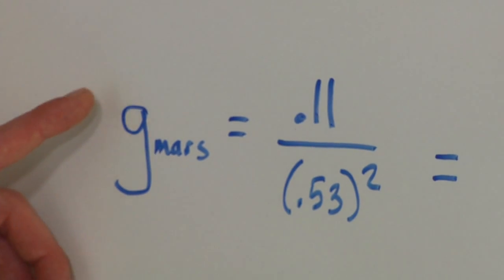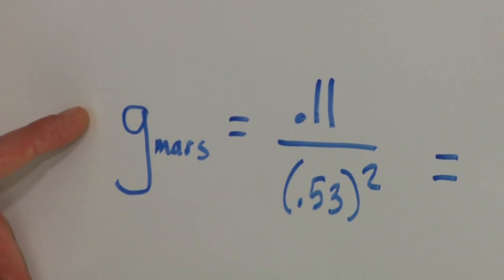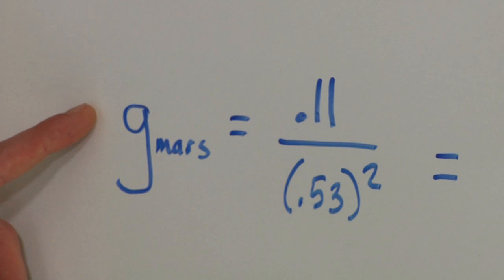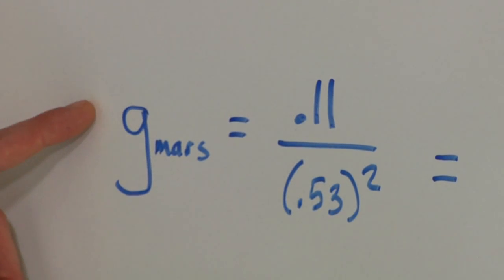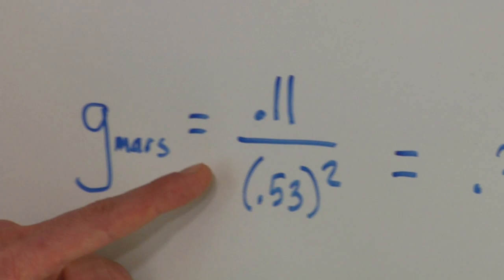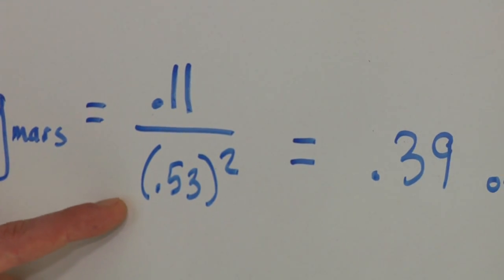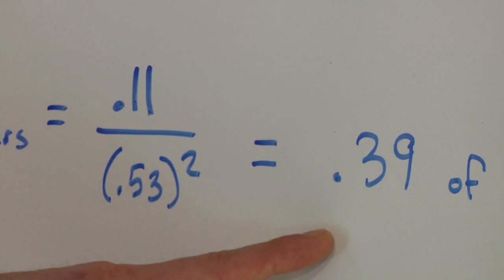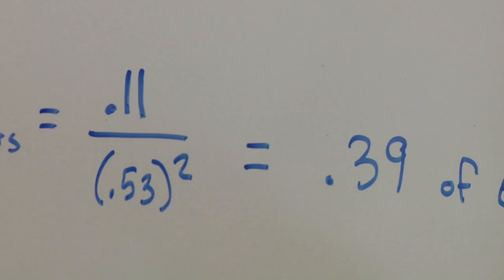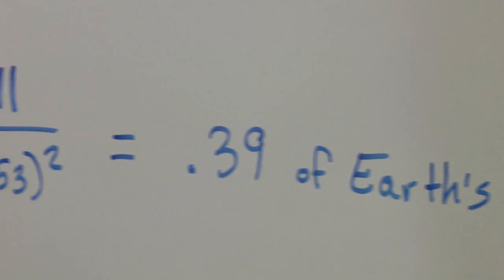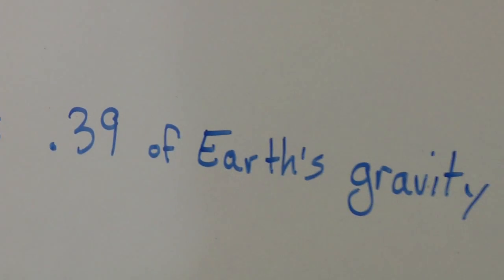The mass of Mars is 0.11 that of Earth's, and the radius of Mars compared to Earth is 0.53. So to find the gravity of Mars, you put 0.11 divided by 0.53 squared, which gives us 0.39. So that means that Mars has a surface gravity 0.39 of Earth's surface gravity.